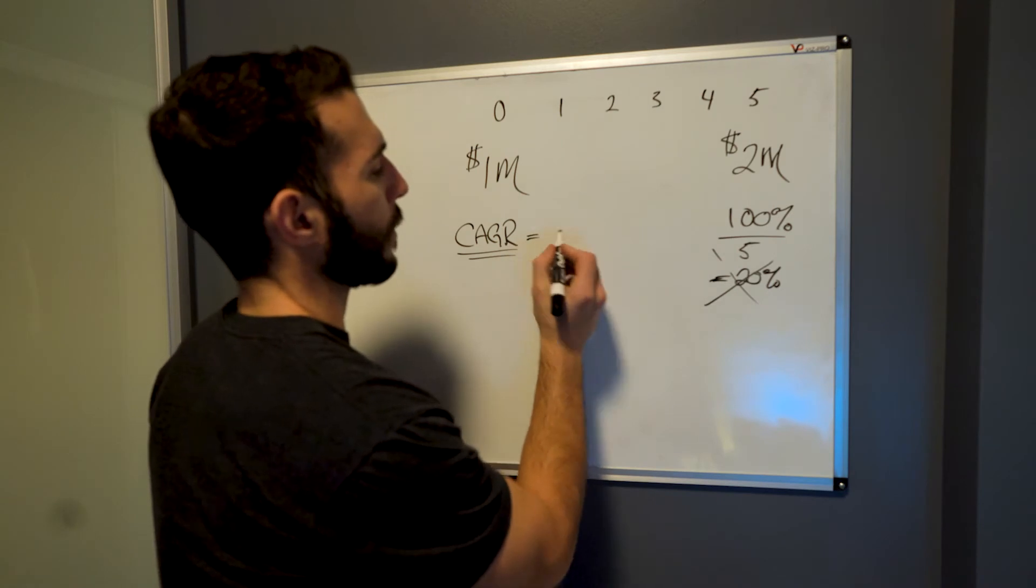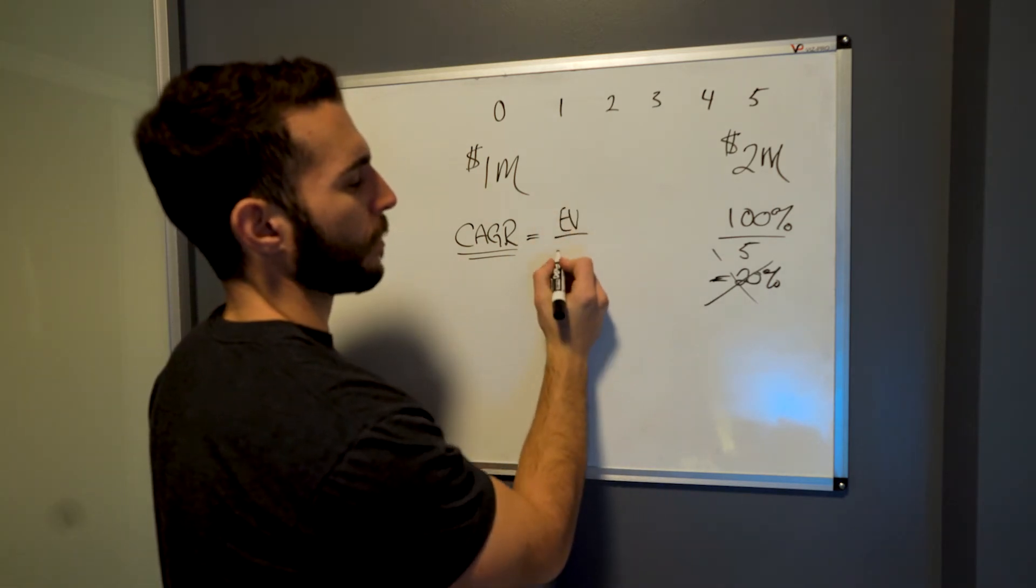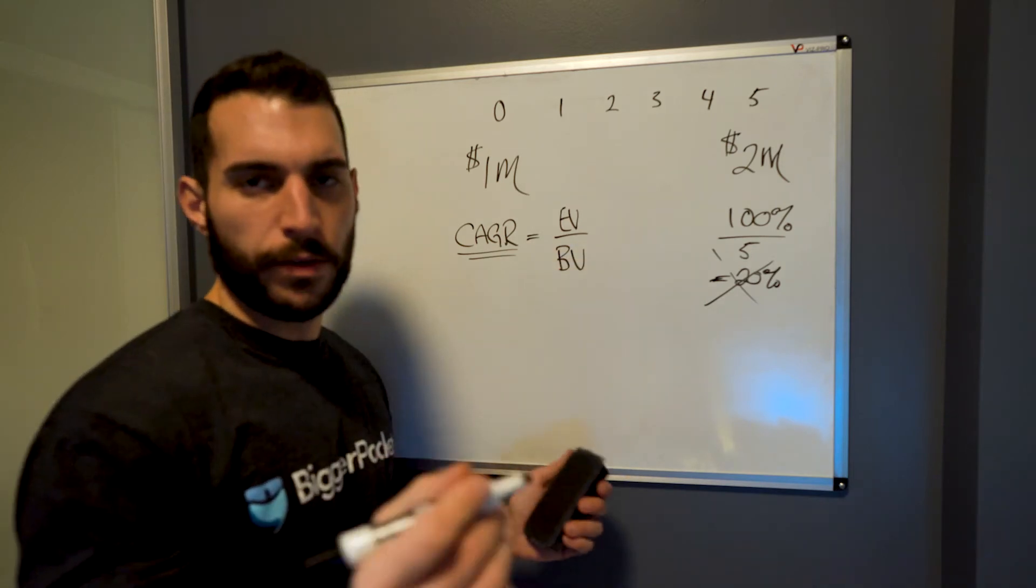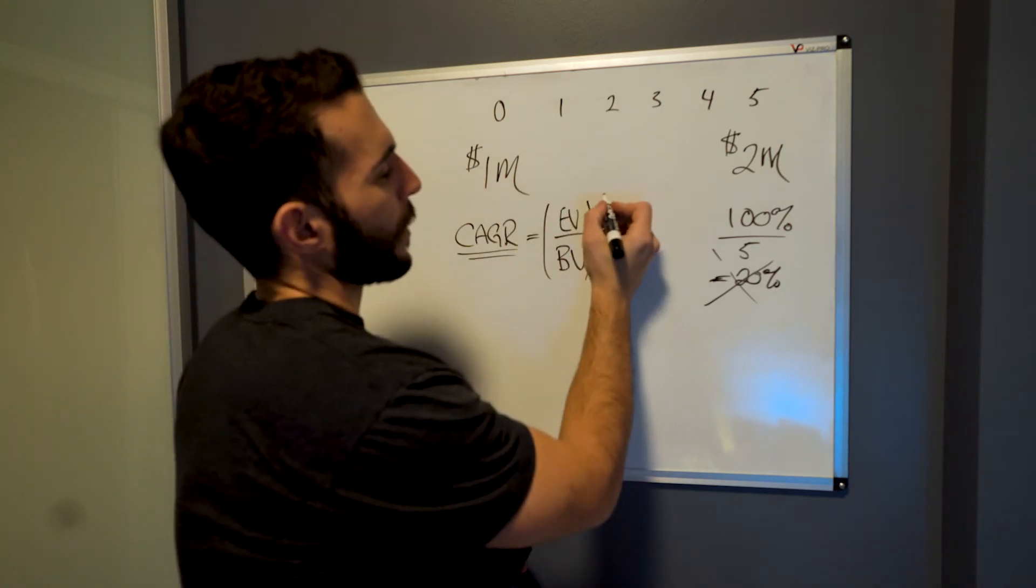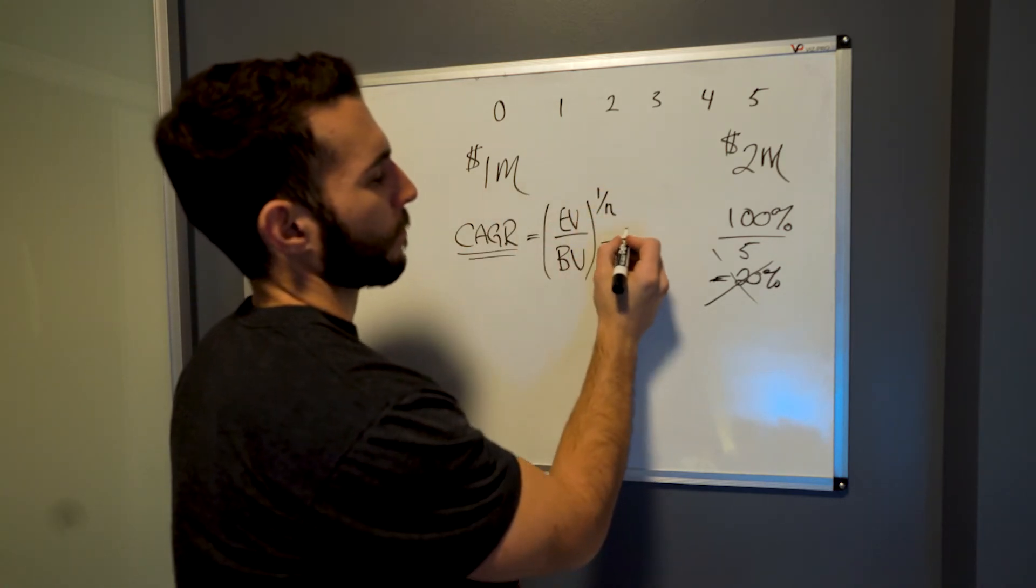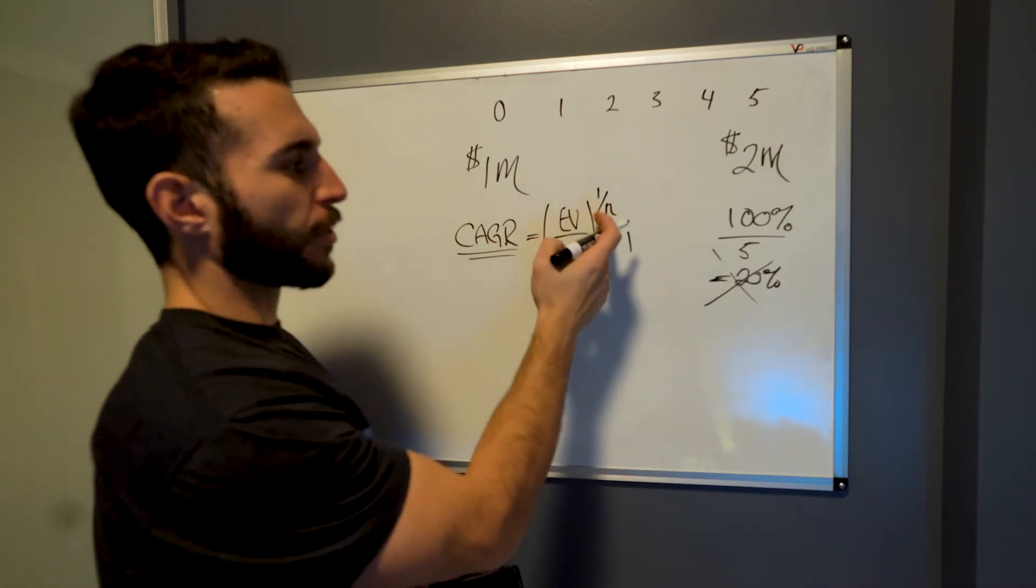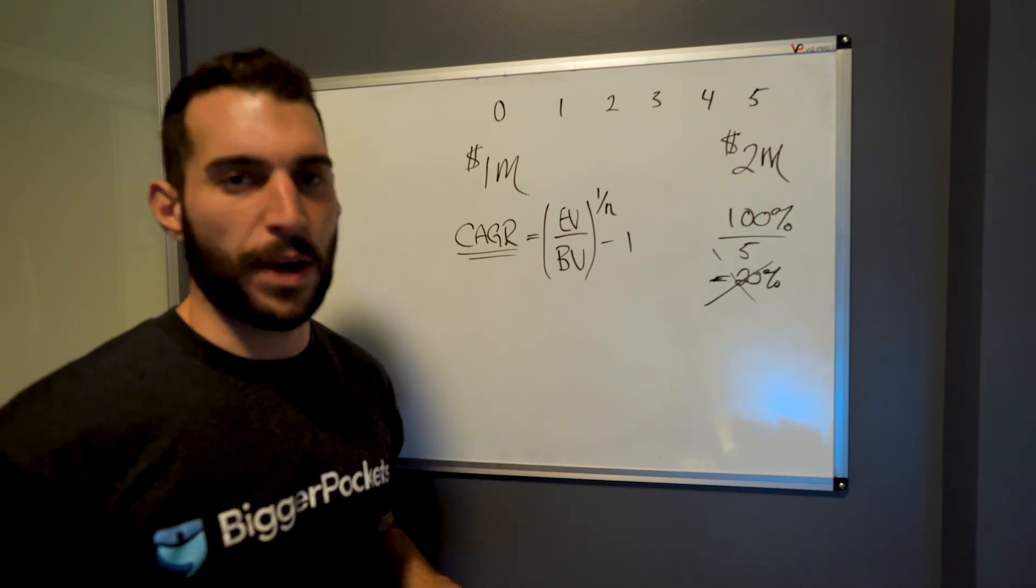So this formula is a little bit different. You have the ending value over the beginning value. That's pretty simple. And then there's a little bit of a wrinkle. They raise it to a funny exponent. And it's funny because it's a fraction. And what this fraction is doing, it's basically the secret sauce that's going to figure out how we do a compound return.